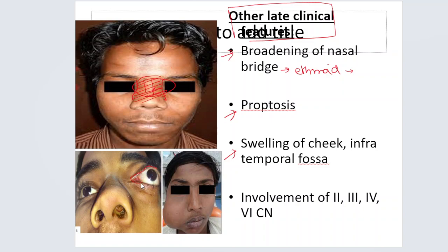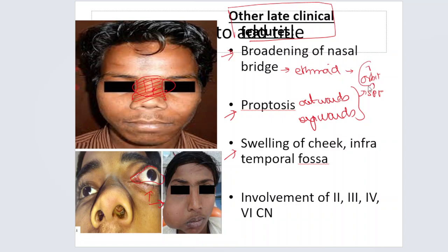There is also proptosis — the eyeball is being pushed upwards and outwards. This happens when the tumor has gone from the sphenopalatine fossa into the orbit through the inferior orbital fissure, occupying the orbit and pushing the eyeball outwards. Additionally, when the tumor has grown from the sphenopalatine fossa through the pterygomaxillary fissure into the infratemporal fossa and cheek, you can see swelling of the cheek.